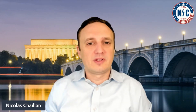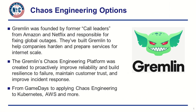There are also commercial options, such as Gremlin. Gremlin was founded by former co-leaders from Amazon and Netflix who were responsible for fixing global outages. They built Gremlin to help companies harden and prepare services for internet scale. The Gremlin chaos engineering platform was created to proactively improve reliability and build resiliency to failure, to maintain customer trust and improve response — from game days to applying chaos engineering to Kubernetes, Amazon, and more.